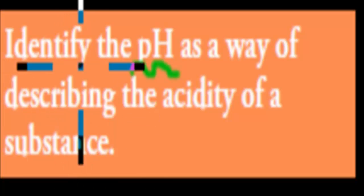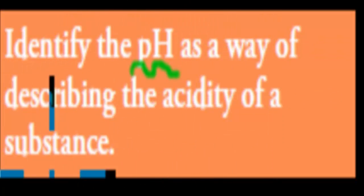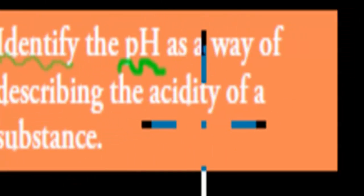First, I'll read the actual dot point. It says, identify the pH as a way of describing the acidity of a substance. So that verb is identify. Identify just means you need to know that pH is a way of describing the acidity of a substance.